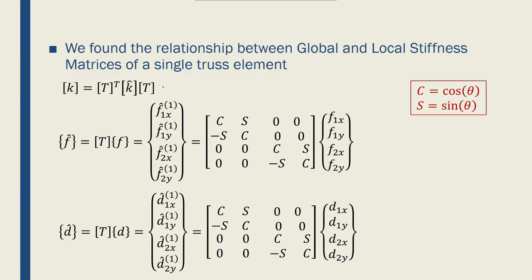So we said that this is the relationship between the local and global stiffness matrices of a single truss element. This is the global stiffness matrix, and this is the local stiffness matrix.